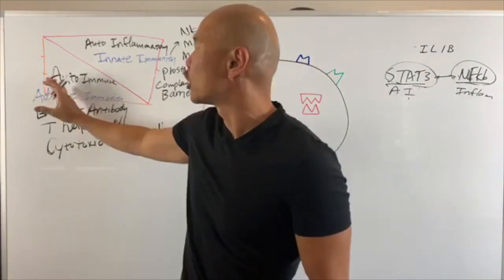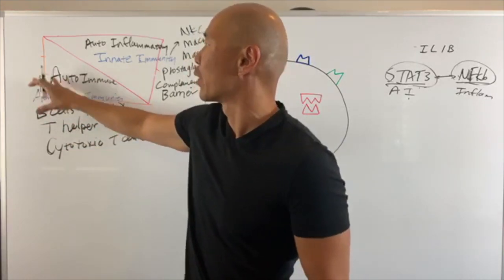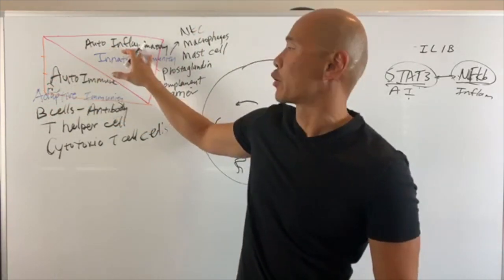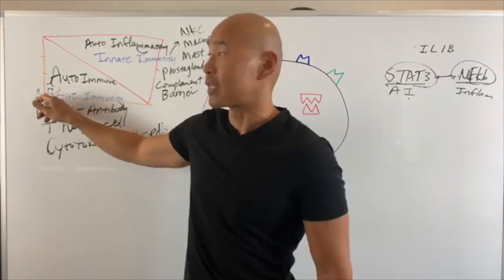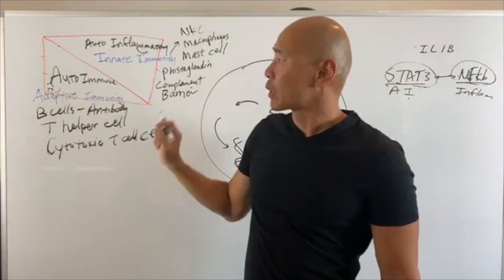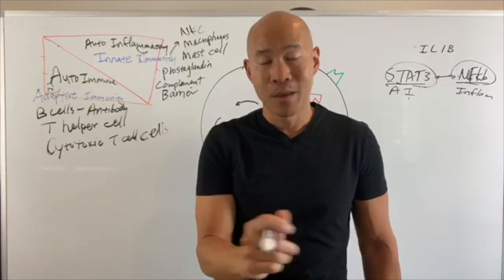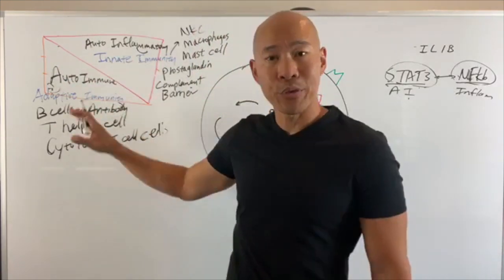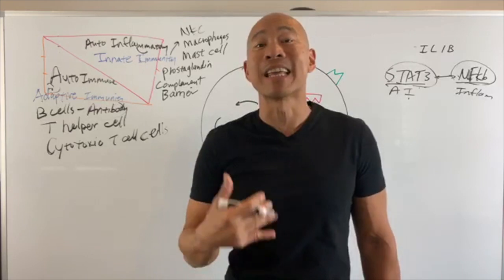It's a spectrum. Some people are completely in the antibody-type autoimmune condition — very much an autoimmune issue, not so much the auto-inflammatory component. Some people are just very inflamed without much autoimmune disease. A lot of people are in between. The point is: when you have autoimmune disease, you are inflamed — without question. There's some degree of both, which is why we always want to address the inflammation.